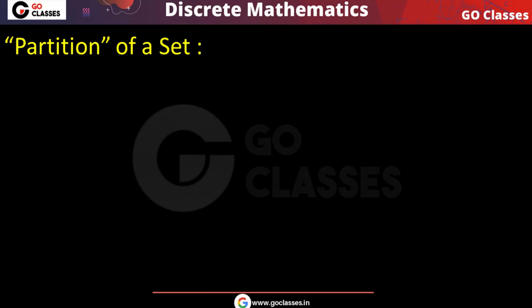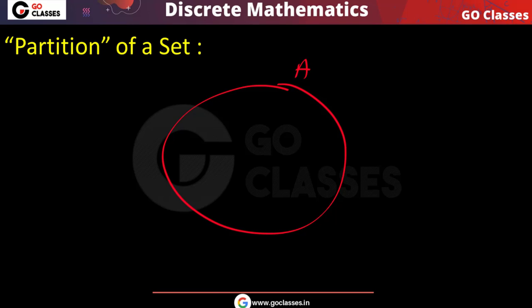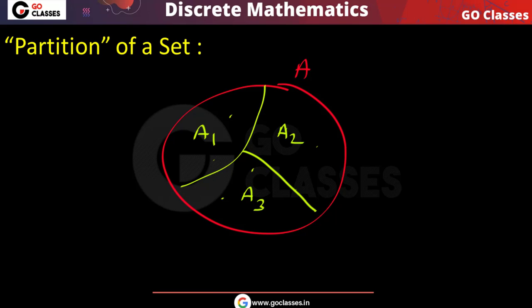Now the next concept is partition of a set. The name itself tells you — partition means dividing the set into some parts. Let's assume you have a set A. Partition means we are taking the elements of A and dividing them into categories: part A1, part A2, part A3.